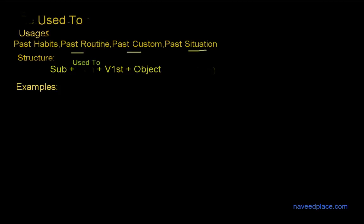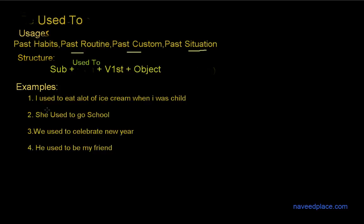Now, let's see the examples of 'used to.' The first example is: 'I used to eat a lot of ice cream when I was a child.' So, definitely, I am showing my past habit. In order to show the past habit, we will use 'used to.'